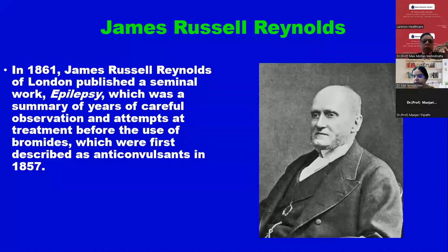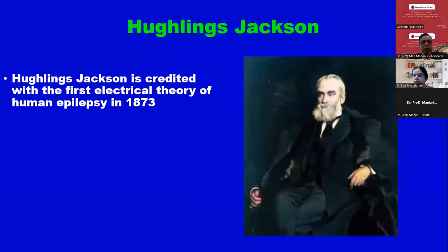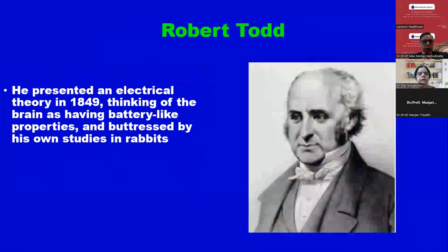Bromide was first used by gynecologists, specially for status epilepticus of eclampsia. Then Hughlings Jackson, the father of electrophysiology, is credited with the first electrical theory of human epilepsy in 1873. Then came Robert Todd — we know Todd's palsy. He presented an electrical theory in 1849, thinking of the brain as having battery-like properties, buttressed by his own studies in rabbits.